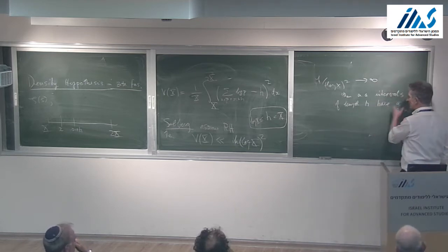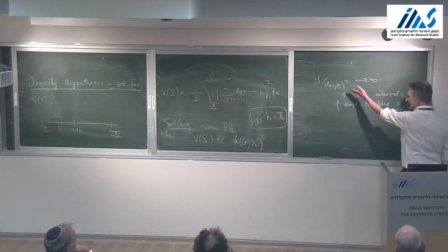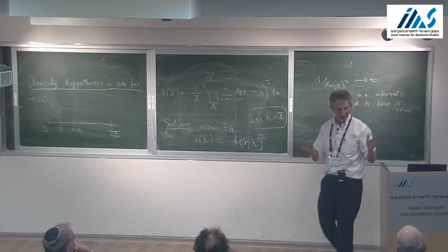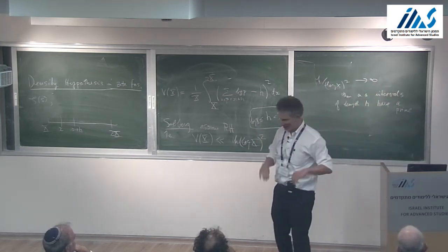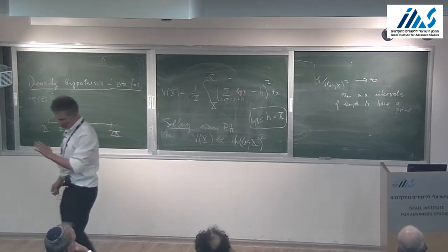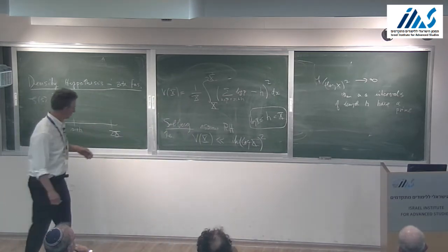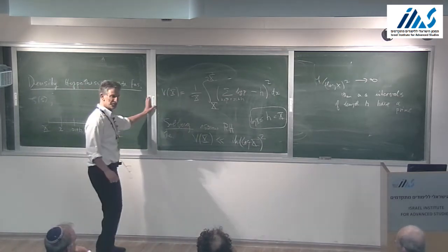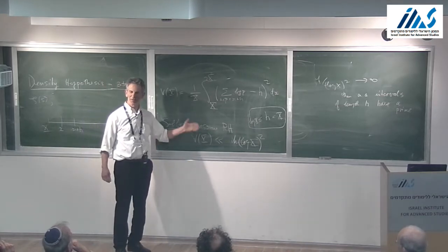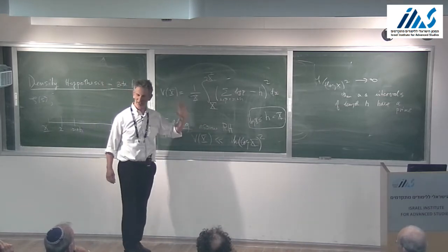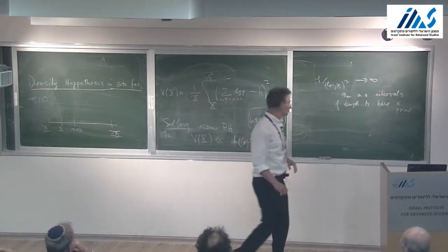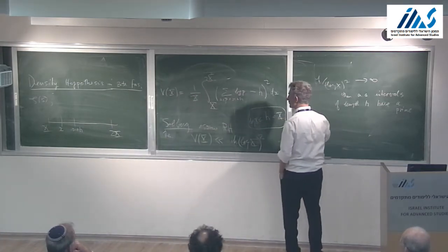You might ask whether every interval of this length has a prime, and there are conjectures of Cramér, but they are wild conjectures. Almost all, we must believe, because we believe the Riemann hypothesis. Now, this conclusion can be essentially proved by a much weaker conjecture, which is much closer to being proved, and that's the density hypothesis.